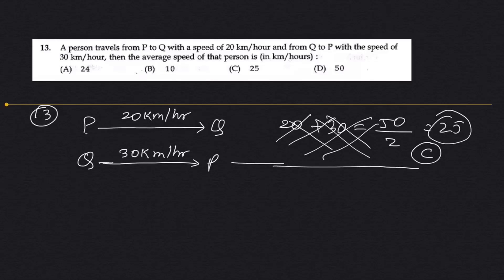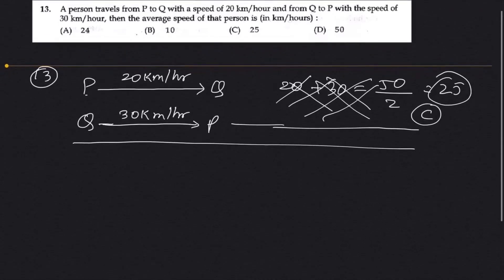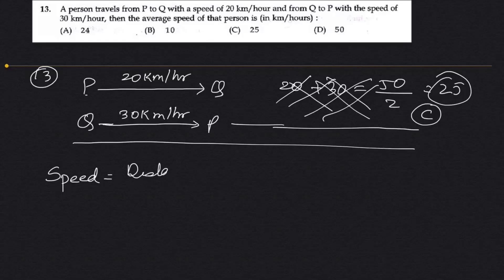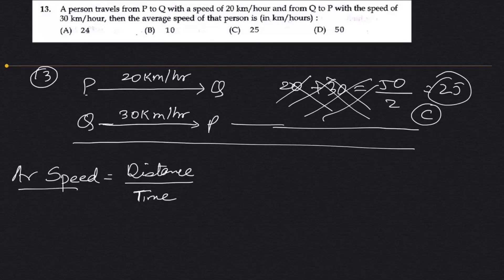This is not the way to do it. How to solve this question — we need to know the formula for average speed. Speed is distance divided by time. They are asking for average speed, so we need to get the total distance from P to Q and Q to P.